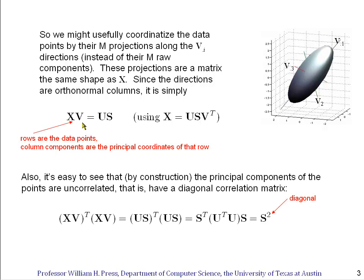It's also easy to see that the principal components, the coordinates in this new coordinate system, are uncorrelated, that is they have a diagonal correlation matrix. This is basically by construction because we've diagonalized the covariance matrix. The correlation matrix would be X times V transpose times X V, and since X V is U S, we end up with U transpose U in the middle, that disappears, we get S squared, a diagonal matrix.